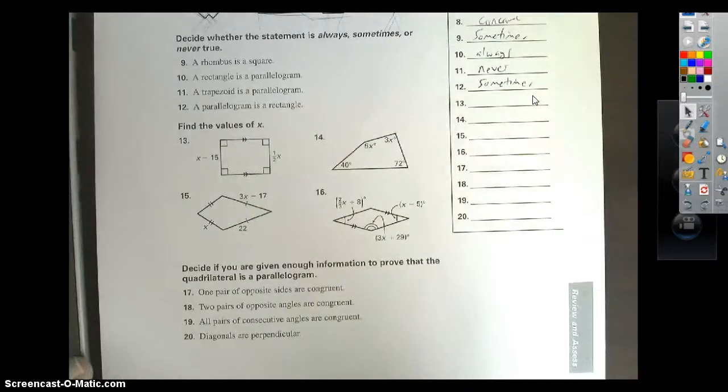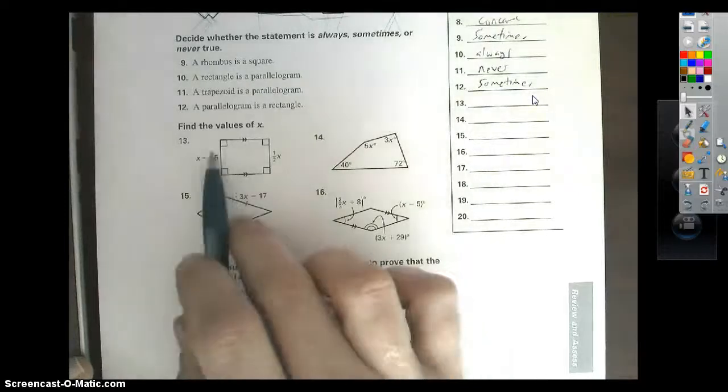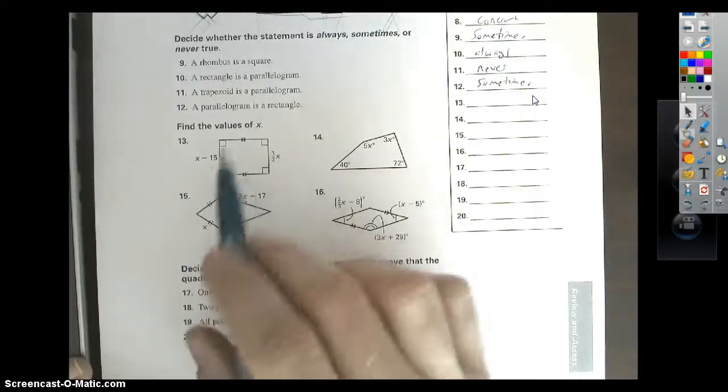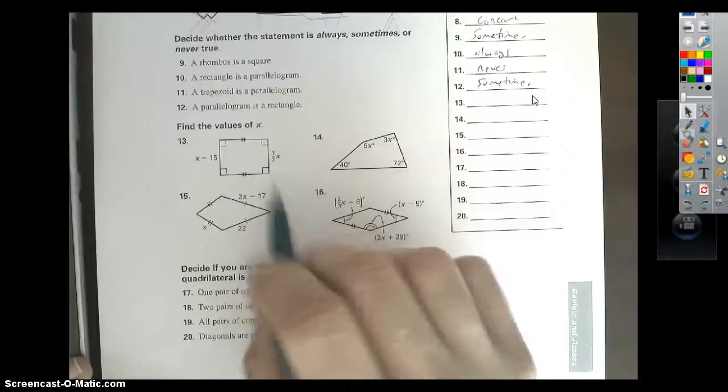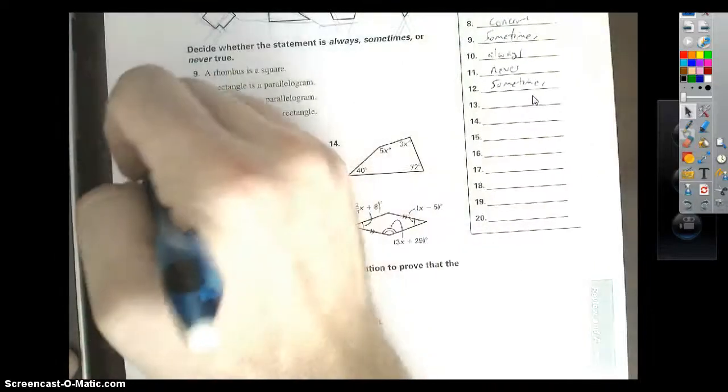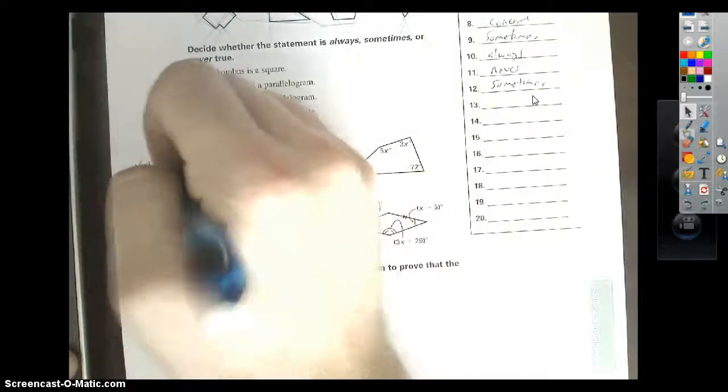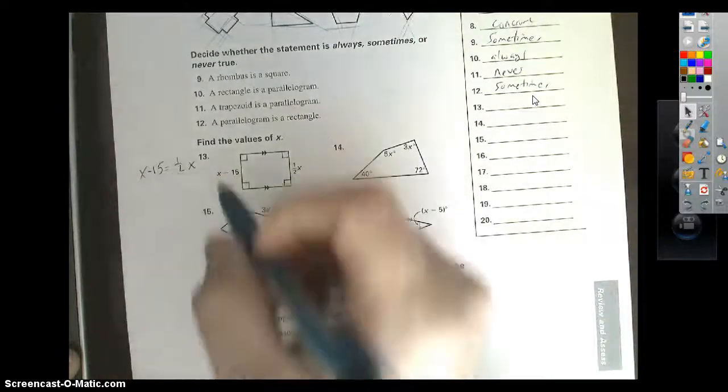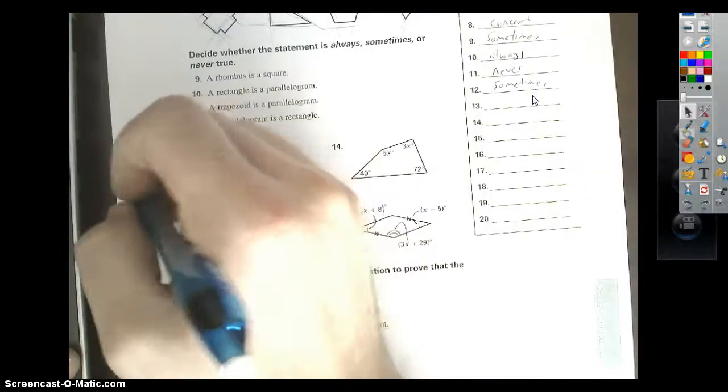Okay, making our way down. Number 13, this resembles a rectangle. Four right angles, and what we got here is opposite sides have to be congruent. So x minus 15 equals 1 half x. Now, I know fractions are scary, but to get rid of it, do the opposite. Multiply everything by 2.